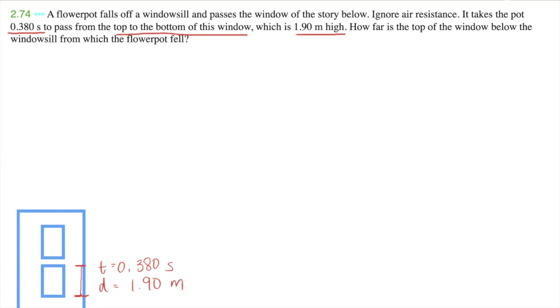Now, how far is the top of the window below the windowsill? I'm just gonna use a different color just so that we can understand that a little bit better. How far is the top of the window below the windowsill from which the flower pot fell? So if our flower pot is this red flower pot right here, and let's just pretend this is directly on the ledge, we want to know what is this distance right here. And this diagram is not to scale.